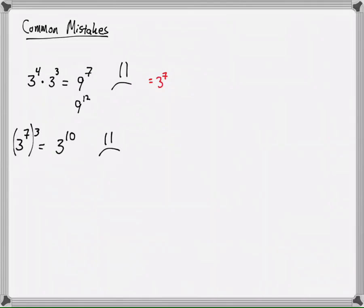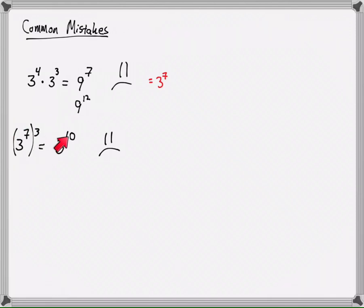Here's another really common mistake. Students will see the 3 and the 7, and they remember you're supposed to add exponents, so they'll add the exponents and say that's 3 to the 10th. It makes no sense. In fact, this is 3 to the 21st power.